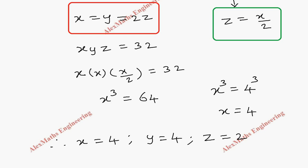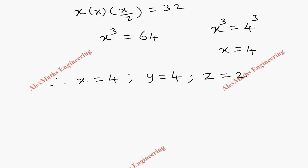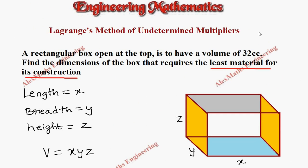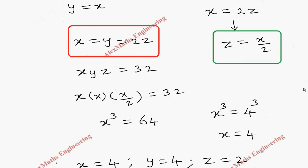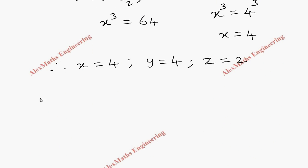So after solving the question, we got the dimension of the box. The unit is, in this they have given, 32 cubic centimeter. So we have to write the units in terms of centimeter. Therefore, length = 4 cm, breadth = 4 cm, then height = 2 cm.